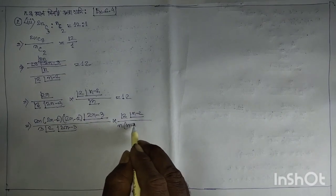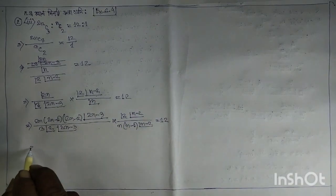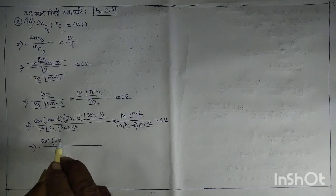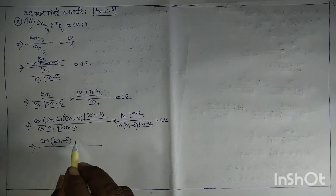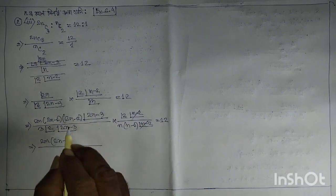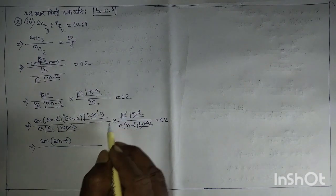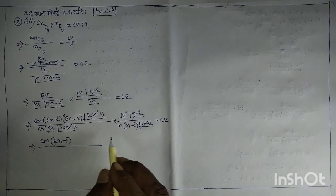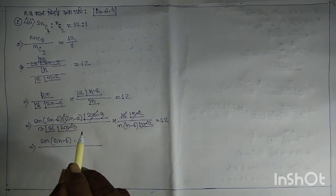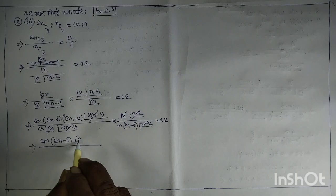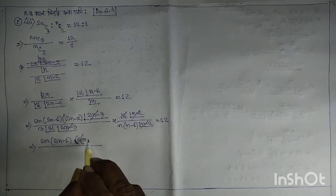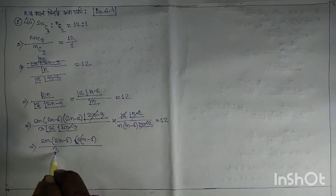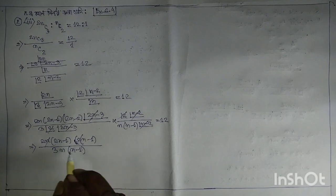By n into 12, implies twice n into twice n minus 1, into factorial n minus 2, factorial n minus 2. 2 is common, so it is n minus 1 by j, n minus 1, n is cancel, n minus 1 is cancel.